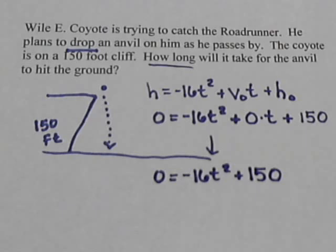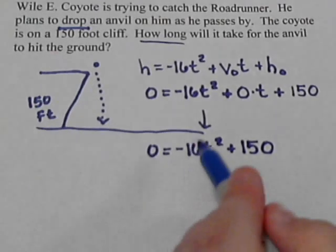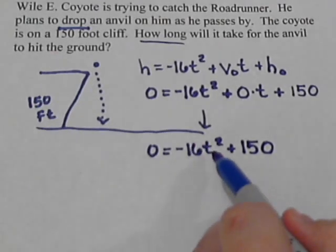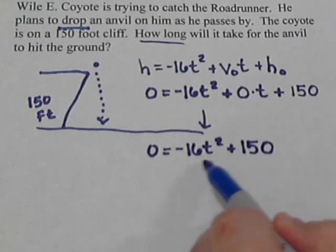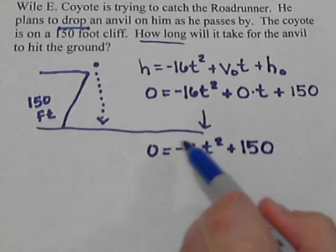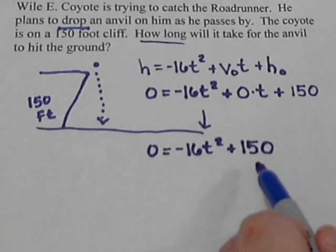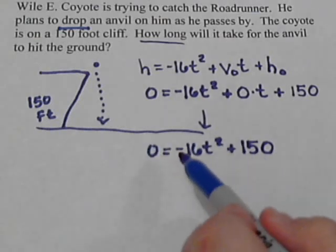All right, we've only got one T in the problem. So to solve this, we need to get that T by itself. So I'm going to take this term with the T in it, and I'm going to move it over to the left. You could move the 150 if you want, but I prefer to move this because that will take that negative.